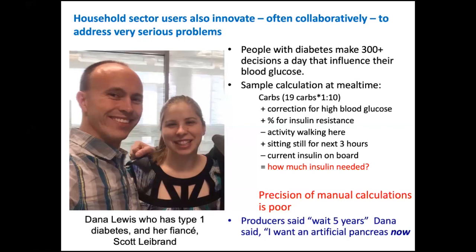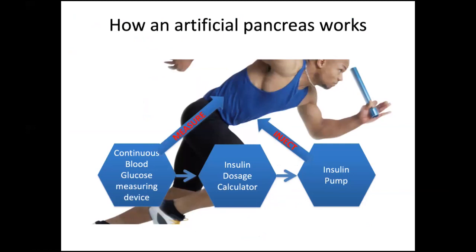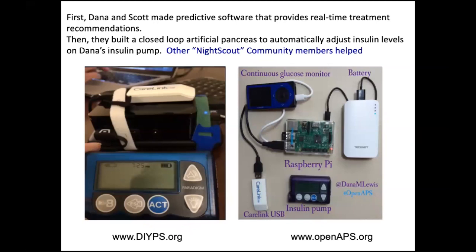After that she was afraid to sleep, as you and I would probably be too. Scott said they had to do something about it. Producers said wait five years for an artificial pancreas. But Dana and her husband said they didn't want to wait - they needed it now. An artificial pancreas works by combining a continuous blood glucose measuring device and an insulin pump, with an automatic calculator in the middle. It would take Dana's rules, automatically calculate how much insulin she needed, and use the pump to deliver it.